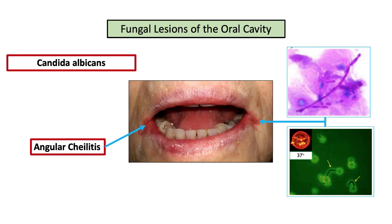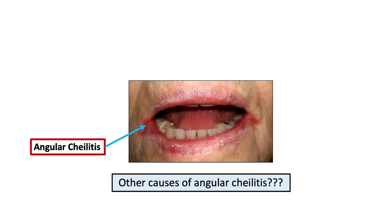Candida albicans can also cause angular colitis, which appears as an erythematous and/or fissured lesion at the corners of the mouth. Although often caused by a fungal infection, angular colitis has a broader differential as well.